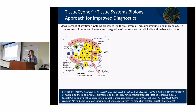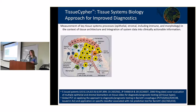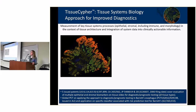Starting with background on the technology platform, we've developed an approach called Tissue Cipher, defined as the measurement of key tissue system processes in the context of tissue architecture and integration of that system data into clinically actionable information. Most cancer biomarkers are markers of epithelial cell abnormalities, but tumors and preneoplastic tissues are complex interacting systems of multiple cell types. Stromal cells, as well as epithelial cells, play important roles in cancer development, progression, and recurrence.